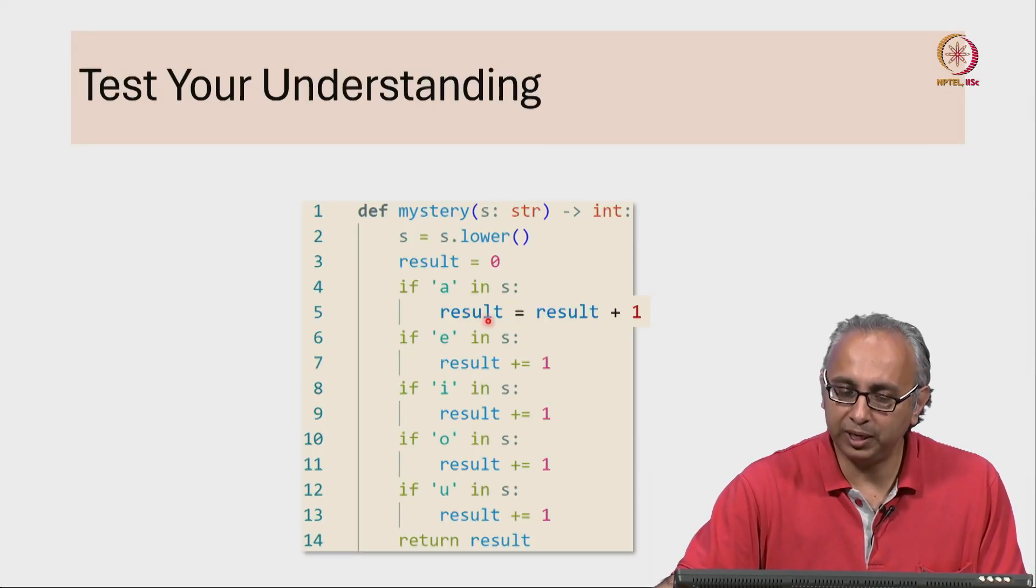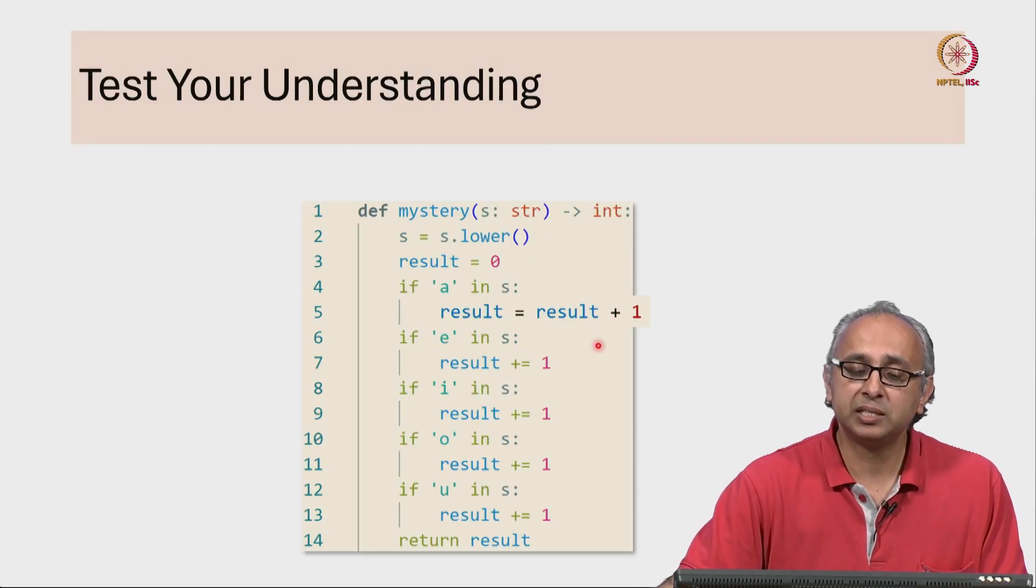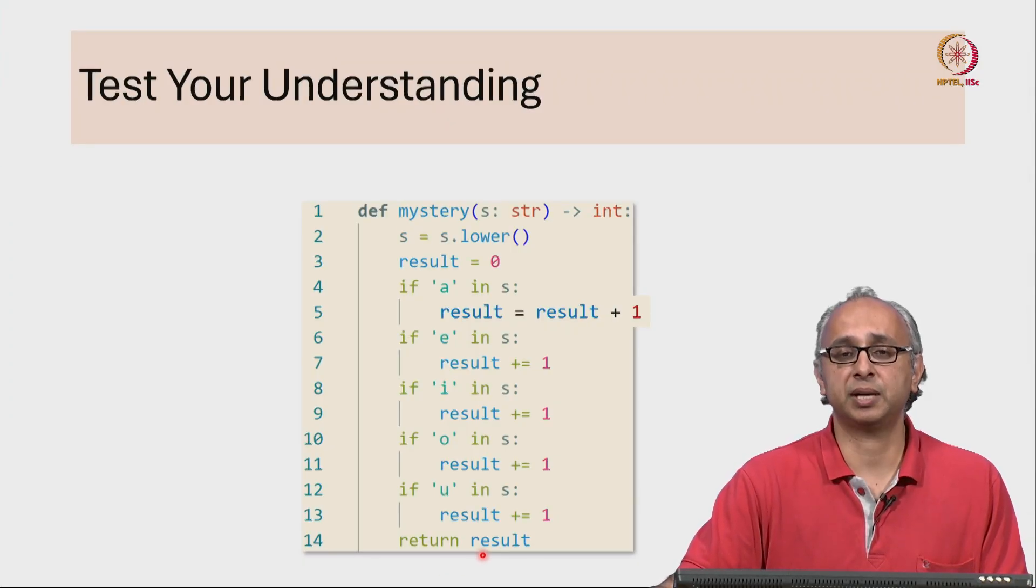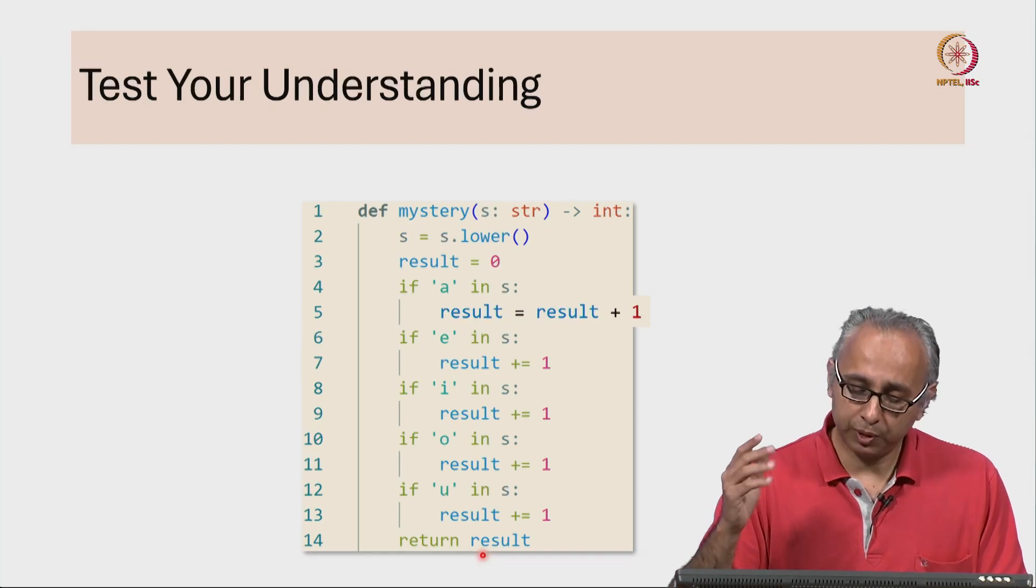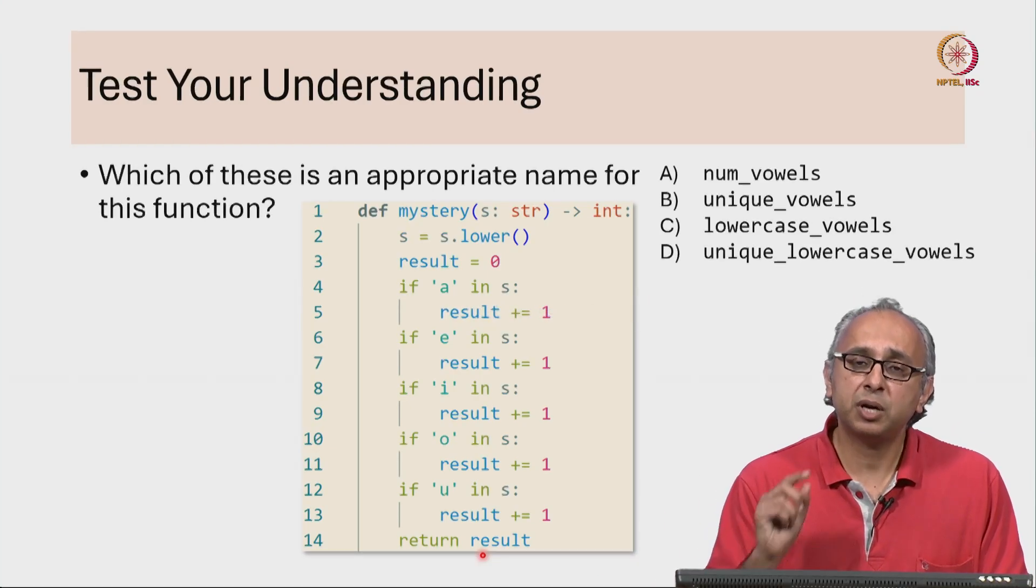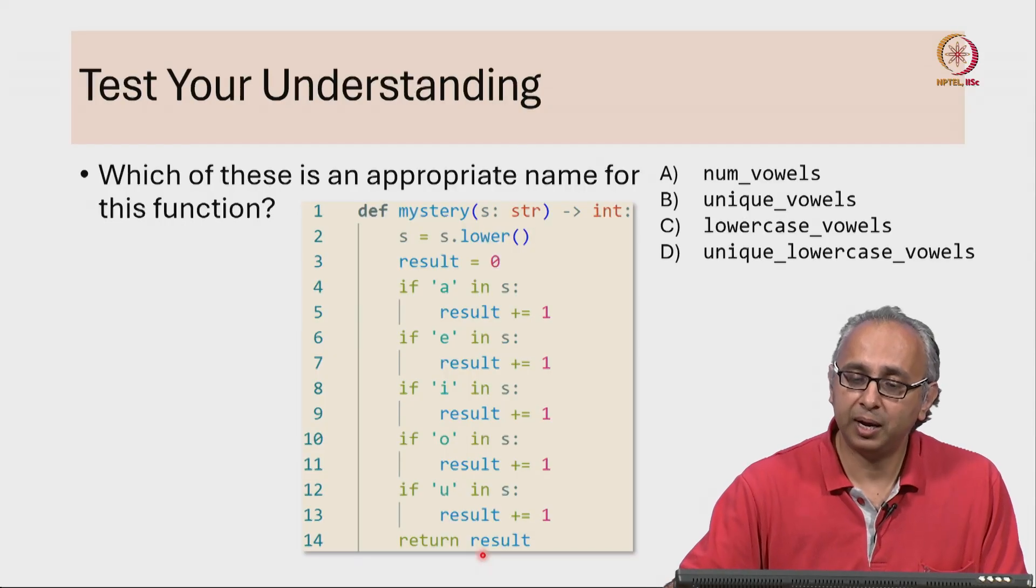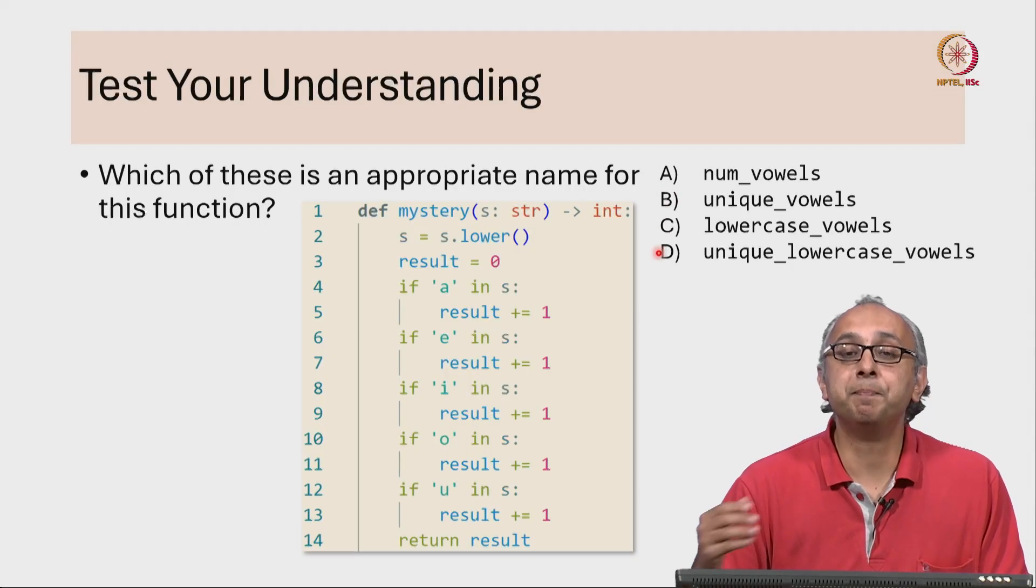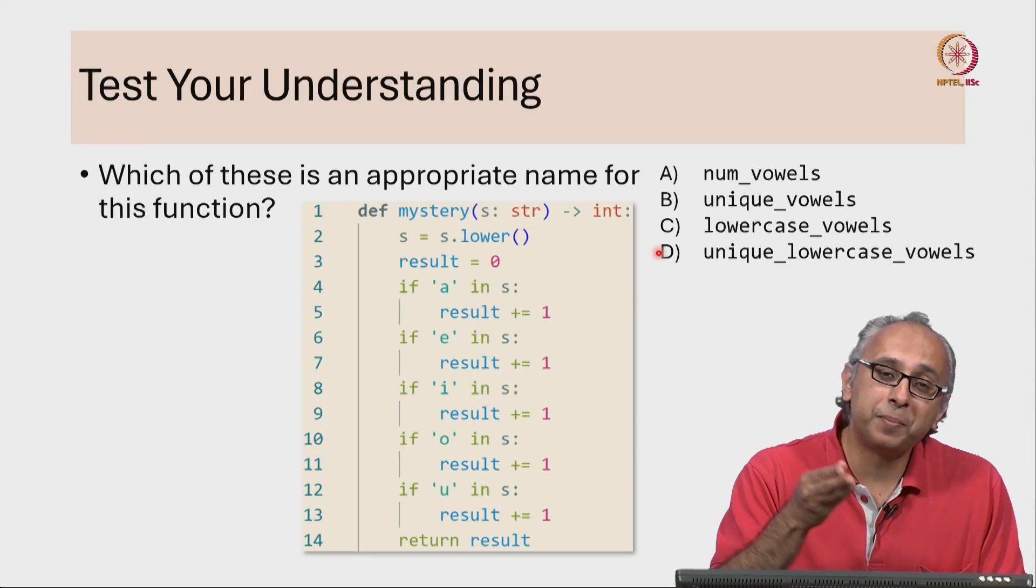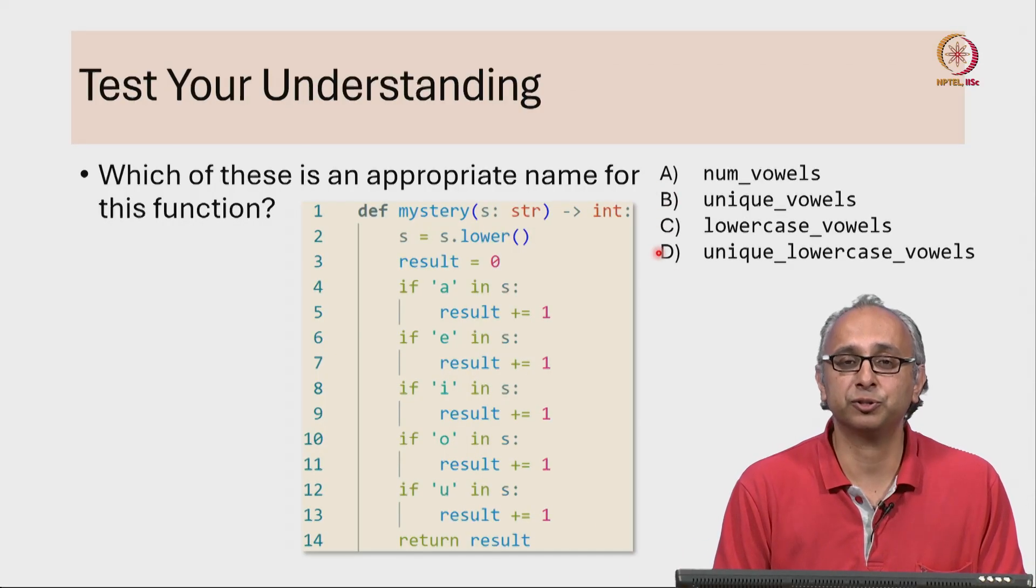So if little 'a' is in the string, we increase the result by 1. Similarly, if little 'e' is in the string, we increase the result by 1 and so on for every other lower case vowel. Finally, on line 14, we return the result. So the question I have for you is can you come up with a better name than mystery? Choose a name amongst these that best captures the purpose of this function.